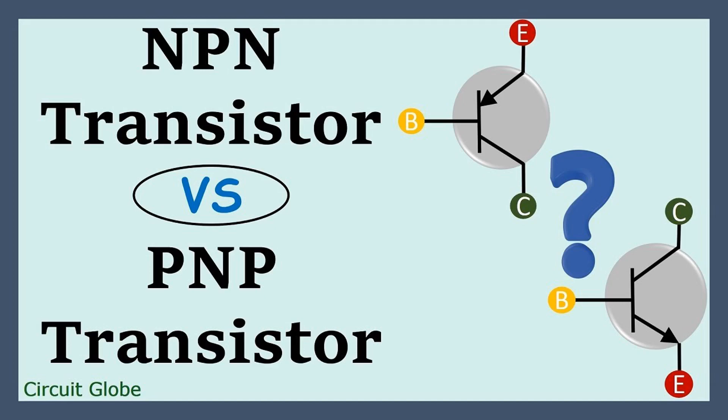NPN and PNP transistors are two common types of bipolar junction transistors, or BJTs, which are semiconductor devices used for amplifying or switching electronic signals. The key difference between them lies in their doping and current flow characteristics.